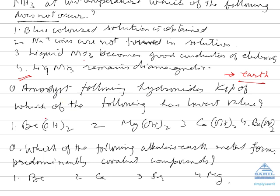Now let us study a few questions. Amongst following hydroxides, Ksp of which of the following has lowest value? Ksp means solubility product. One which has greater solubility will have higher solubility product. So Ksp will be minimum of that alkaline hydroxide which is least soluble. So the answer will be beryllium hydroxide. We know solubility of hydroxide increases down the group.